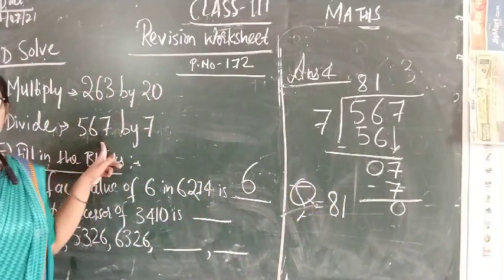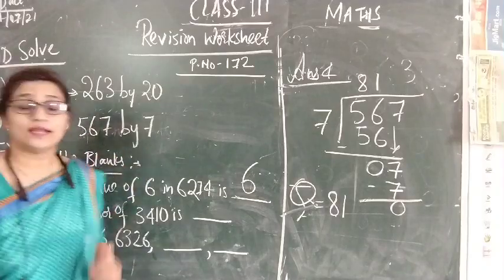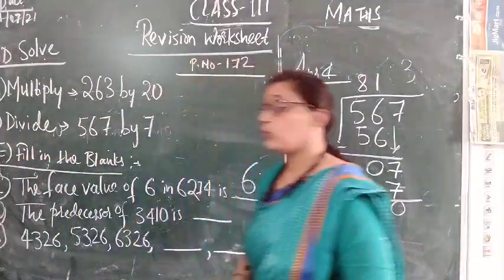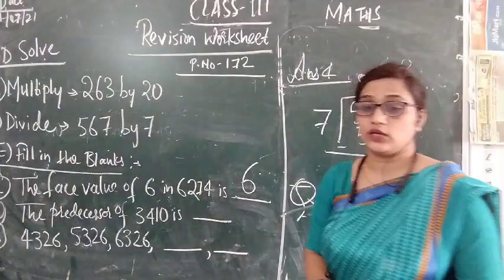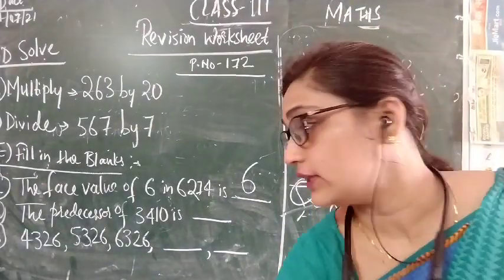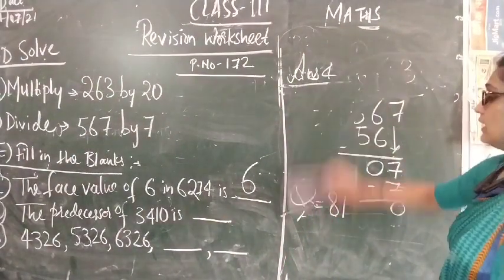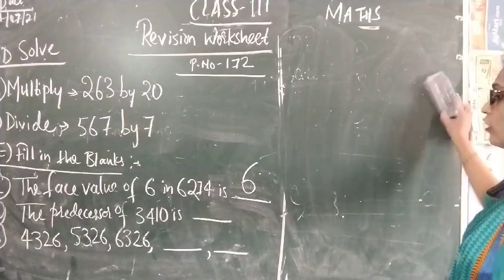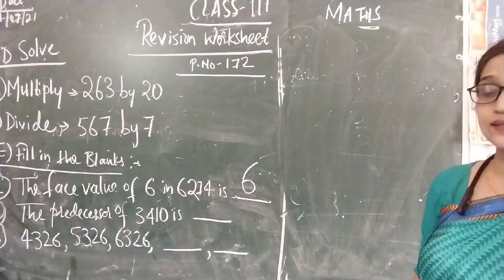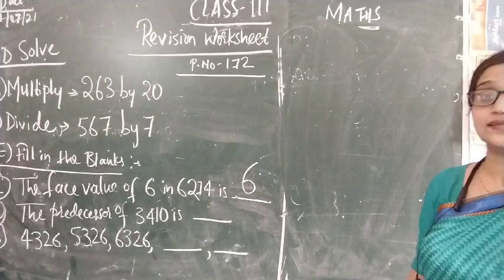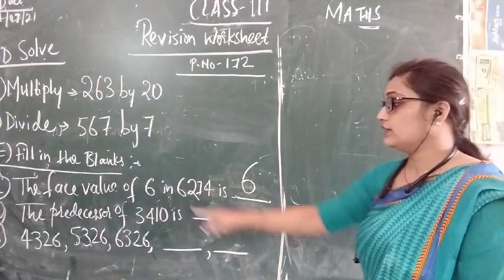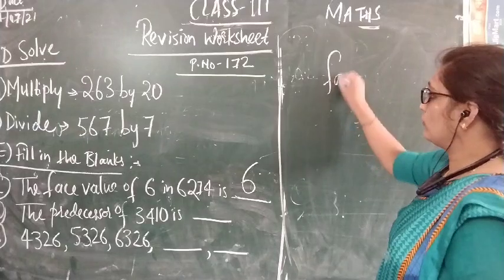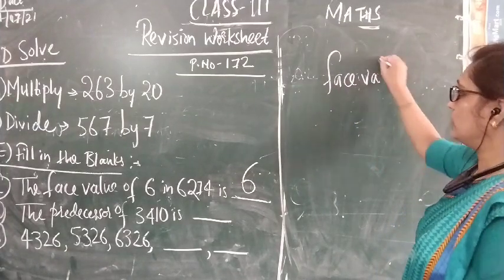This section is completed. Now let us move forward to question number E, that is fill in the blanks. First question of fill in the blanks is the face value of 6 in 6274. We have to find the face value.